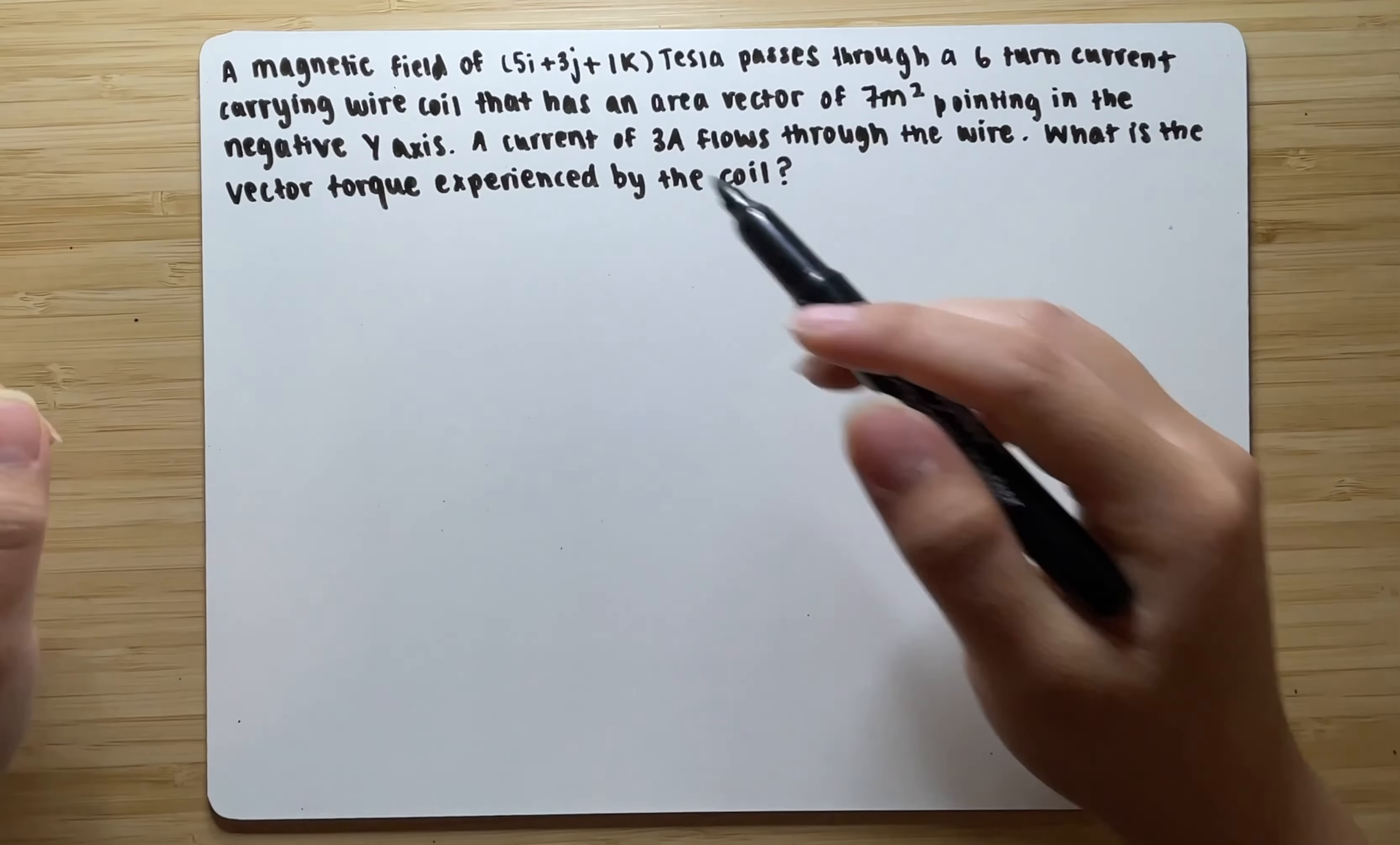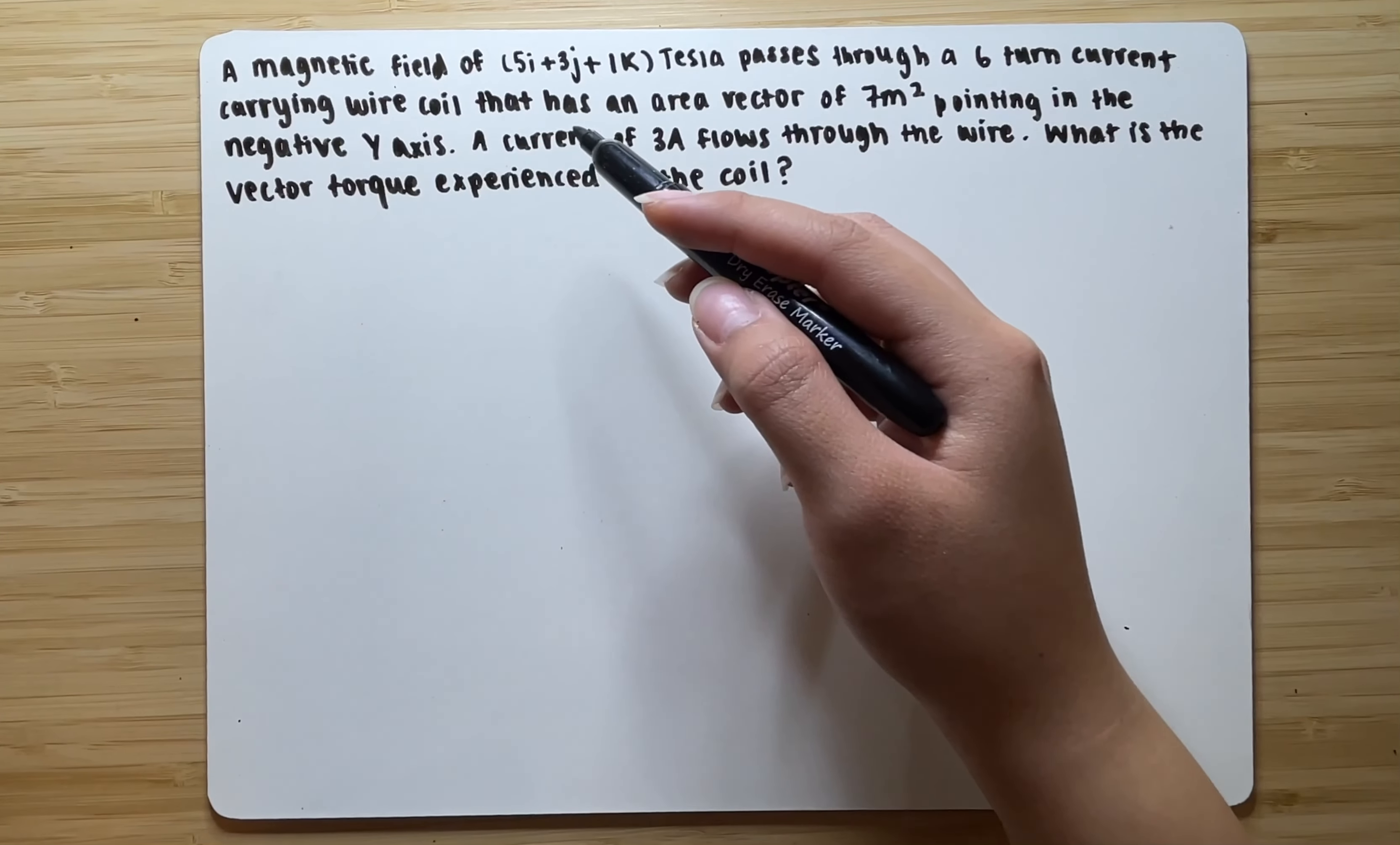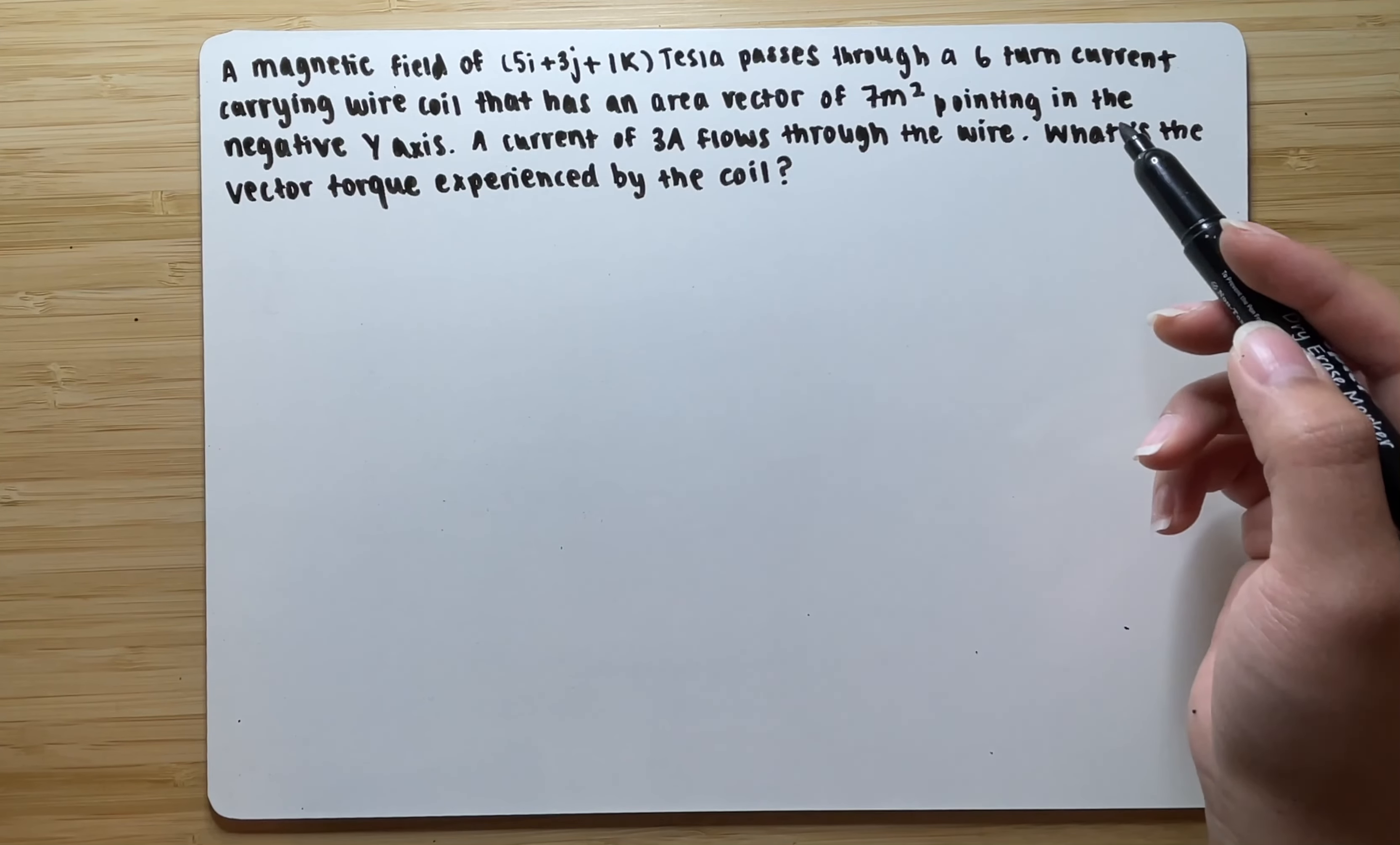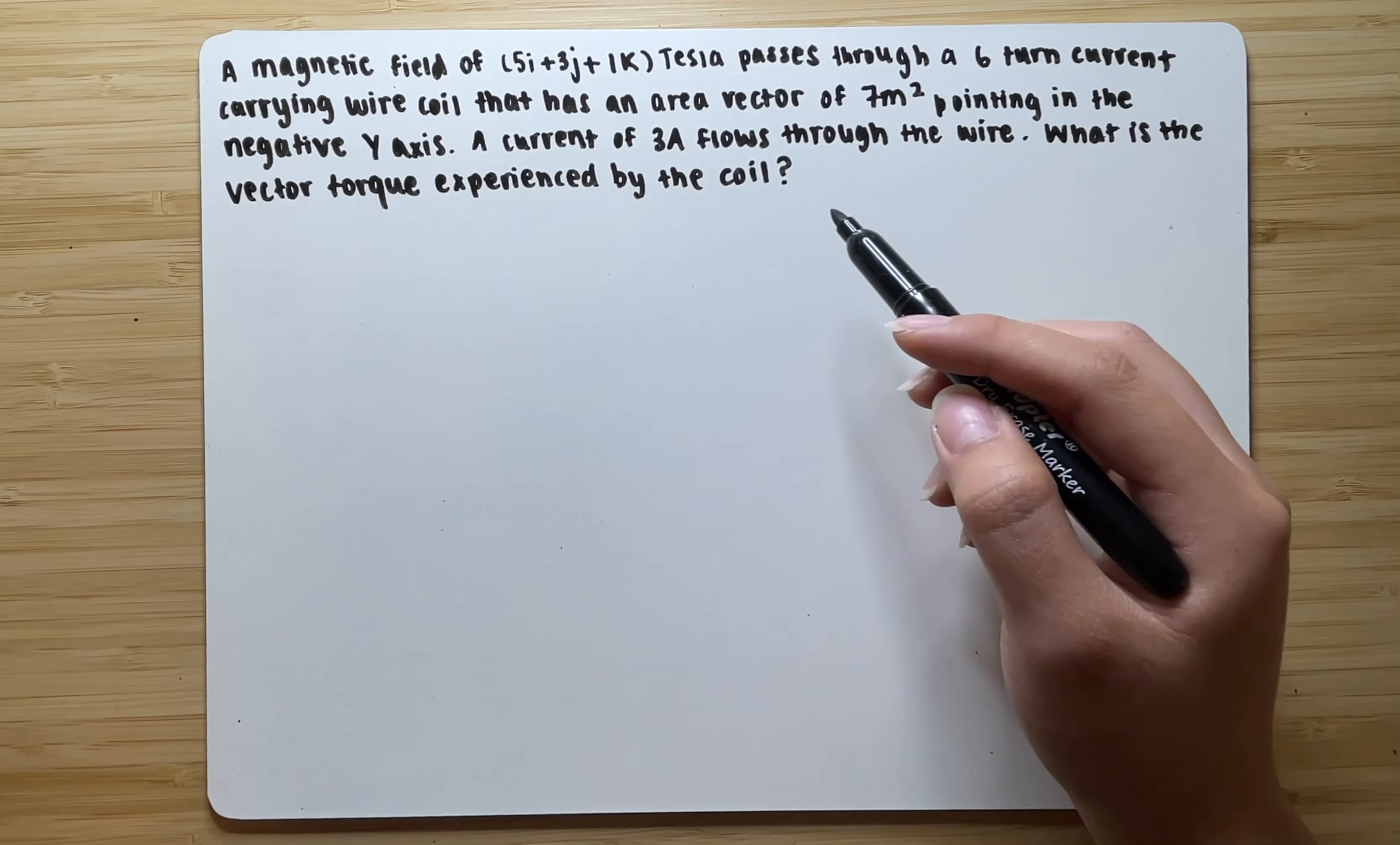A magnetic field of 5i plus 3j plus 1k Tesla passes through a 6-turn current-carrying wire coil that has an area vector of 7 meters squared pointing in the negative y-axis. A current of 3A flows through the wire. What is the vector torque experienced by the coil?